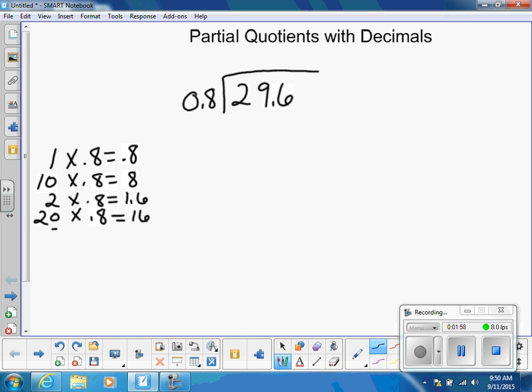And then 5 is also a nice number, nice fact, factor to use. So 5 groups of 8 tenths, I know that I can think about as being half. I know 10 times 8 tenths was 8, so 5 times 8 tenths would be half of that. So that's 4.